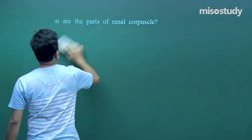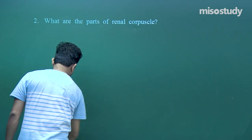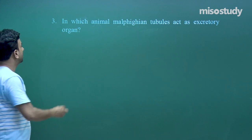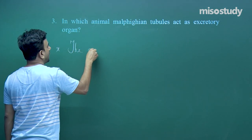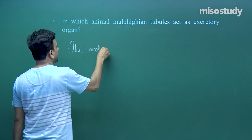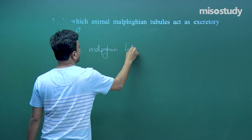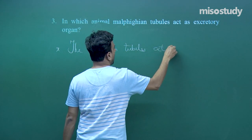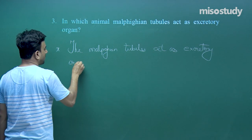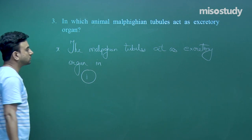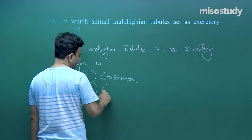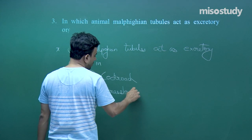Next: in which animal do the Malpighian tubules act as the excretory organ? The Malpighian tubules act as excretory organs in cockroach and the grasshopper.